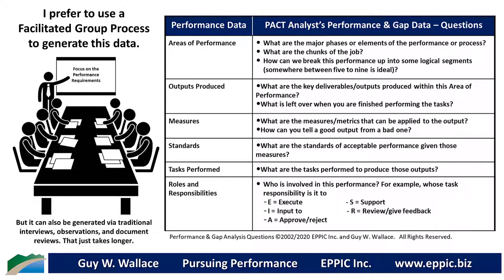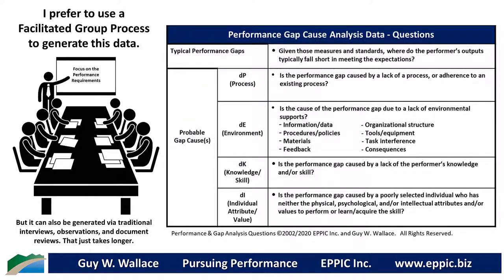It's really critical to understand who does what. Then we can move into the gap analysis against the ideal that we've already captured. Given the measures and standards, where do other non-master performers fall short in meeting those expectations? We can capture those gaps and then determine what are the probable gap causes.